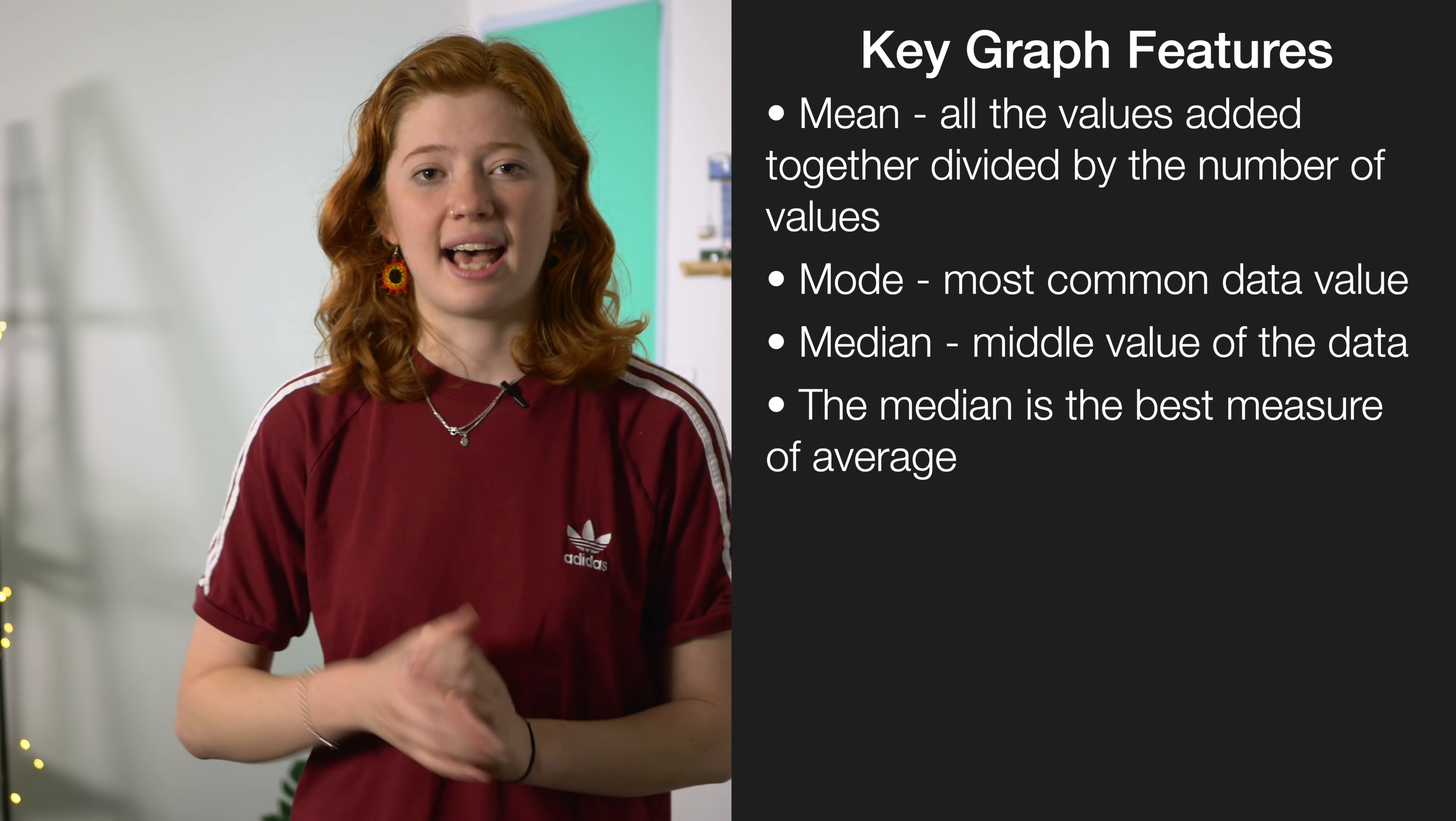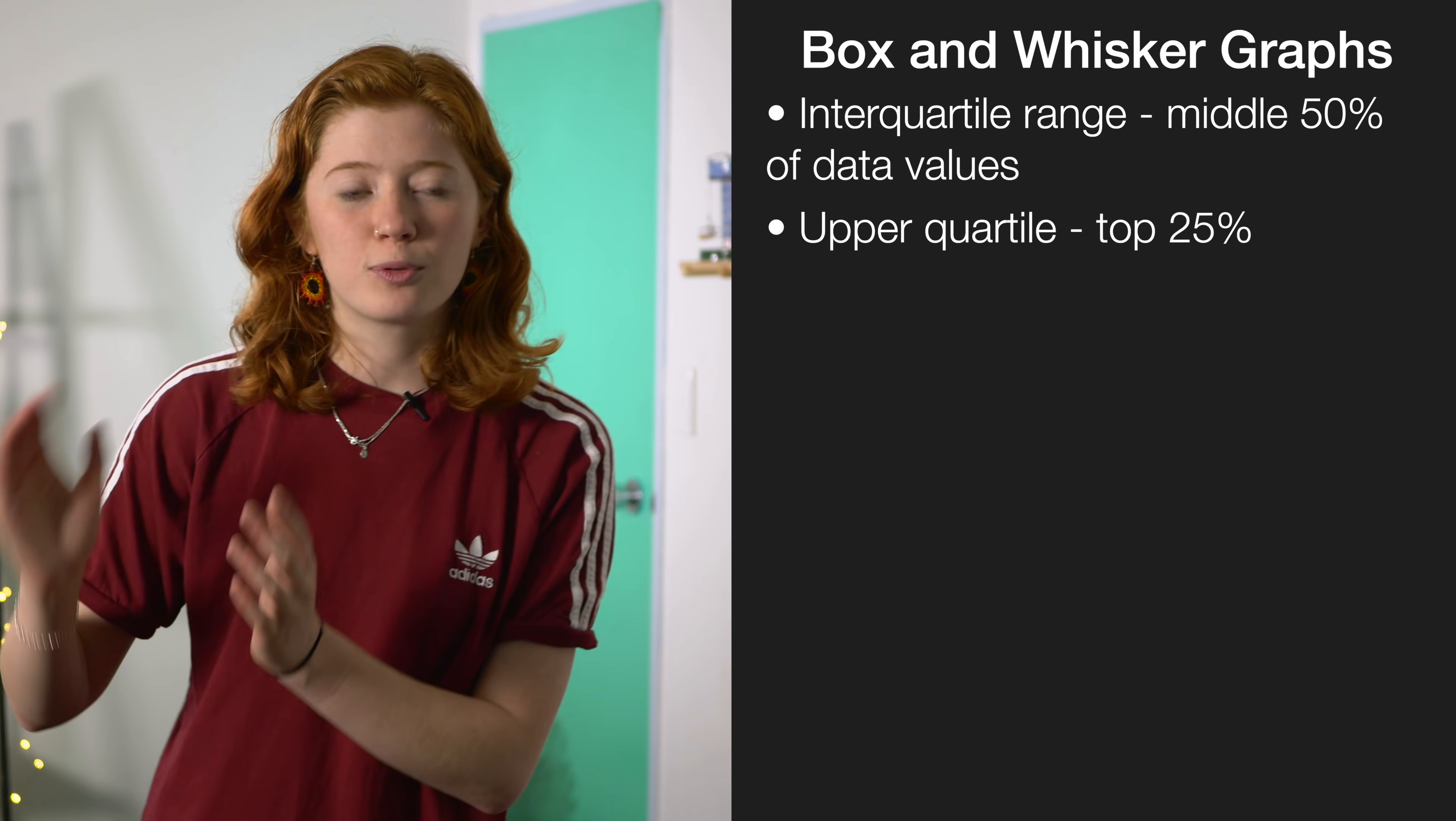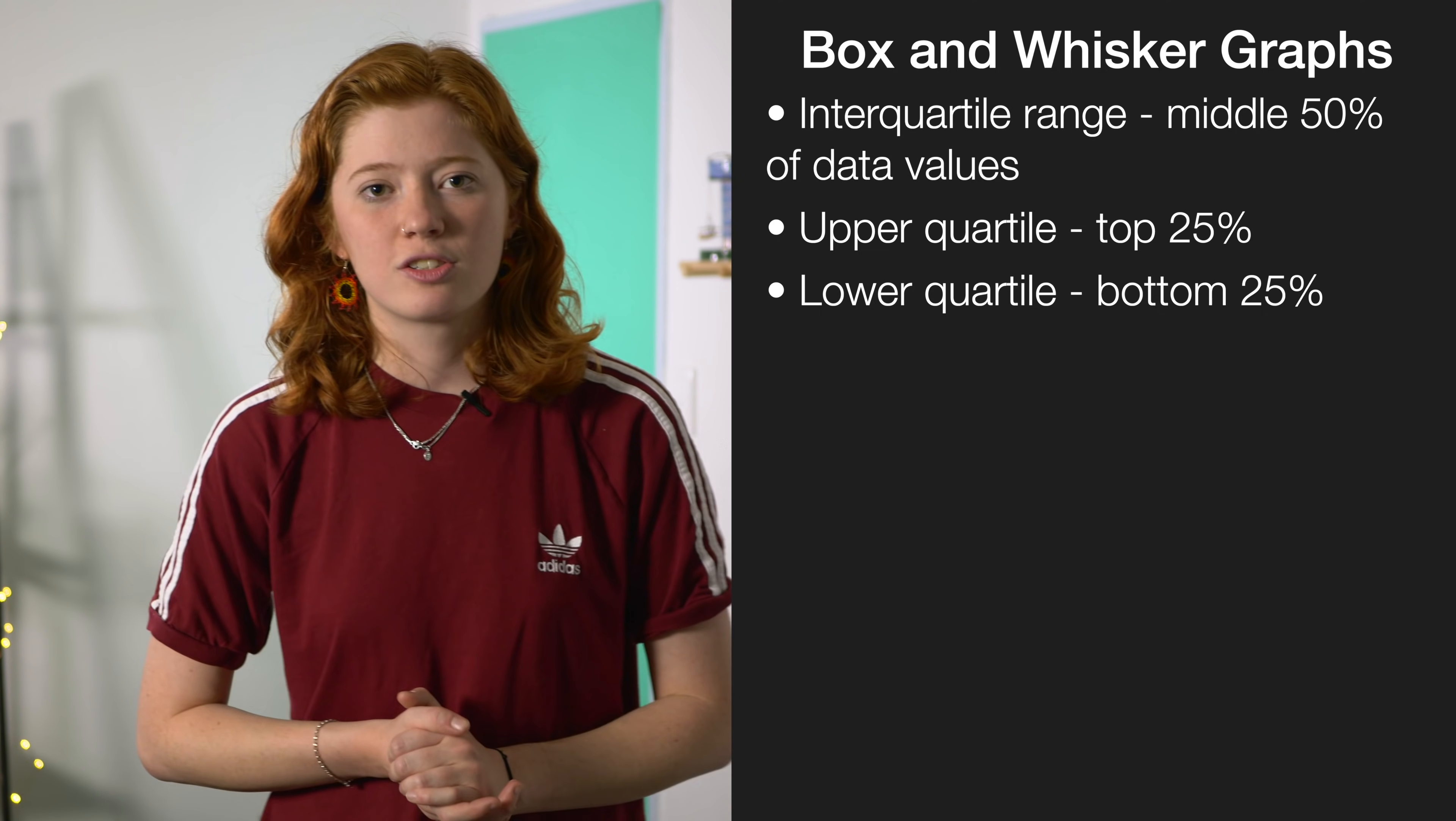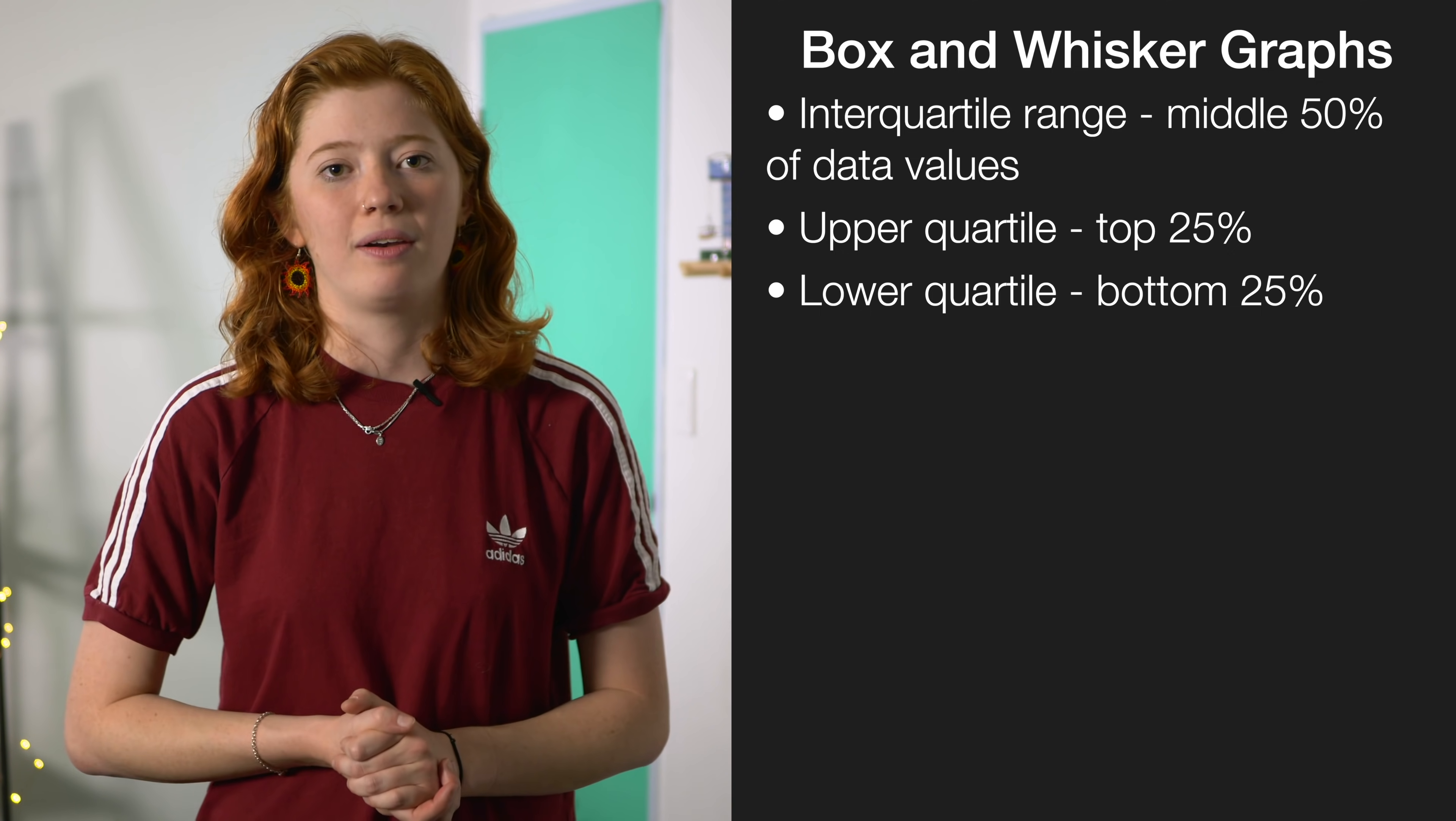The next thing you need to be able to do is understand and interpret box and whisker graphs. This means looking at the interquartile range, which is your middle 50%, your upper quartile which is your top 25% of values, and your lower quartile which is your bottom 25%. Once you've done this you can go ahead and start to answer your questions. A really good trick is to take a pen into your exam and circle everything on the graph that you may need to write about later on.